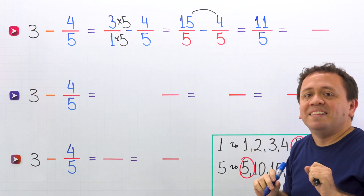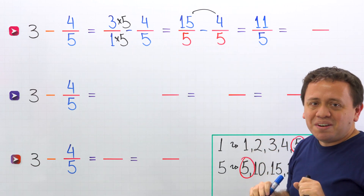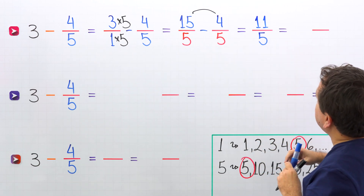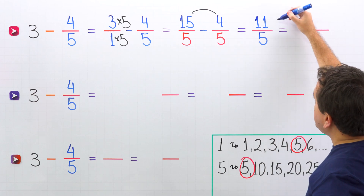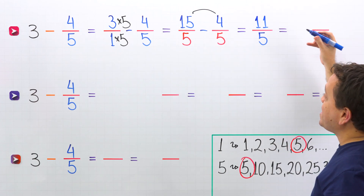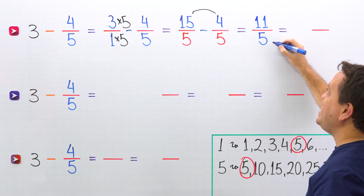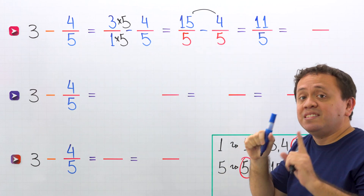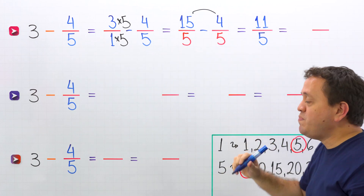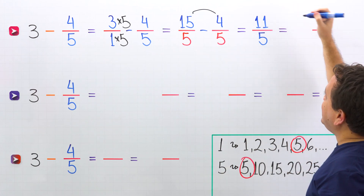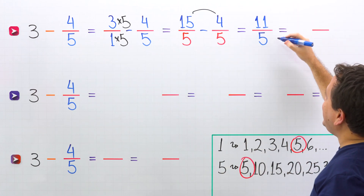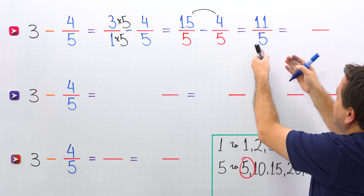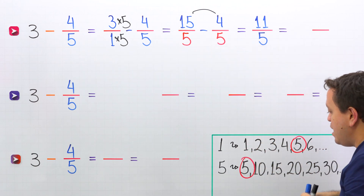But there is something else. At this point, we should remember improper fractions. An improper fraction is a fraction where the numerator — the top number — is greater than or equal to the denominator, the bottom number. 11 fifths is an improper fraction, given that the numerator 11 is greater than the denominator 5. Also, we can convert improper fractions to mixed numbers.